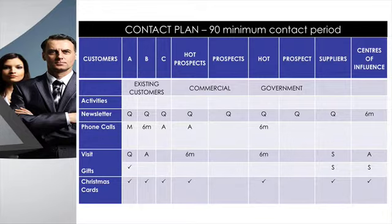Down the side you list the potential contact activities. The main ones we put here are: a newsletter — electronic or paper — which is a good basis for ensuring that minimum 90-day contact. You could also do phone calls on a regular basis, visit them on site, give them gifts, send a Christmas card, invite them to events like the footy, cricket, or the opera, and you may also have special internal events like drinks nights or lunches.